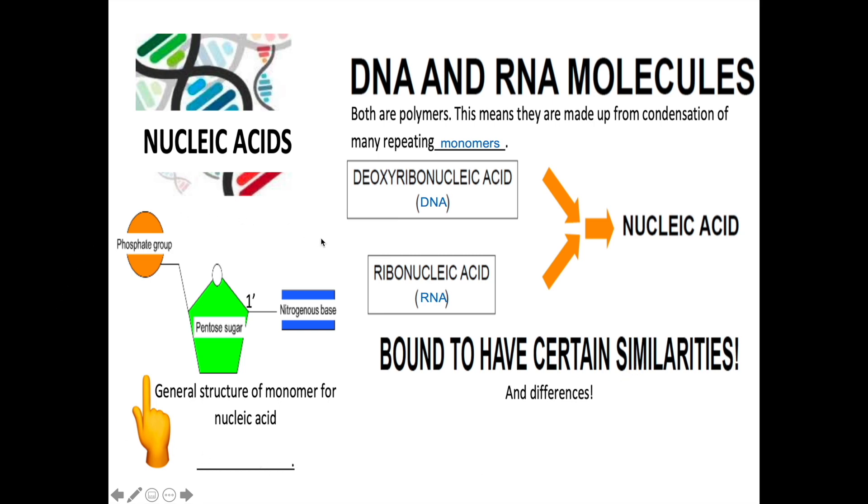This is the general structure of monomer of nucleic acid, whether it be DNA or RNA. It is called nucleotide. Nucleotide consists of phosphate group, pentose sugar, and nitrogenous base. Pentose sugar refers to sugar with 5 carbon. It is important for you to know the numbering of the carbon. This is carbon number 1 that is attached to nitrogenous base, carbon number 2, 3, 4, and carbon number 5 located outside of the ring.